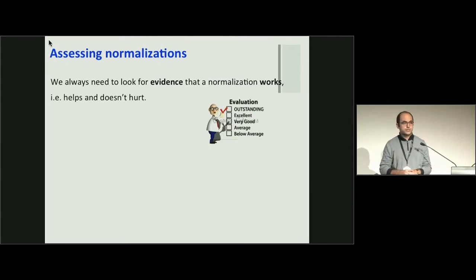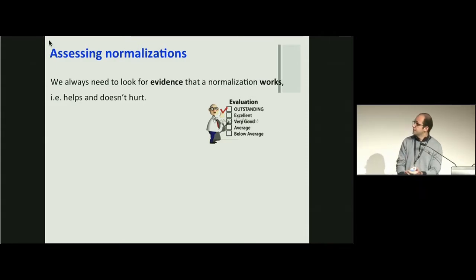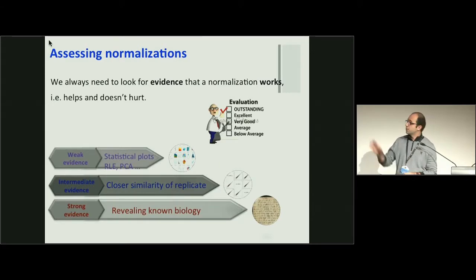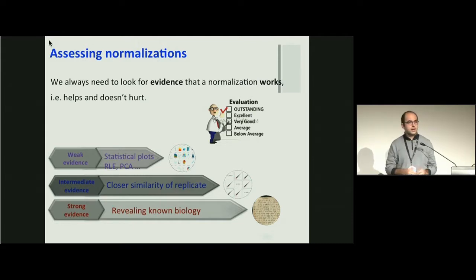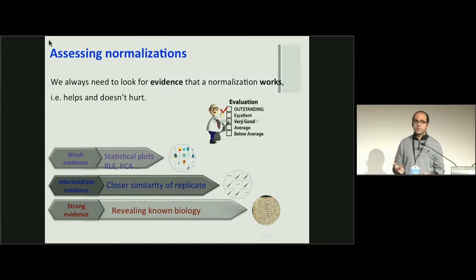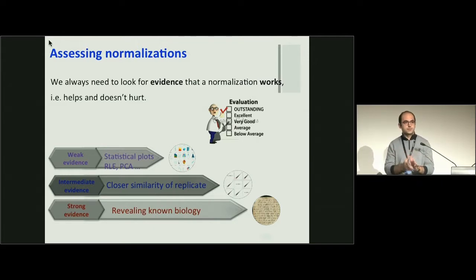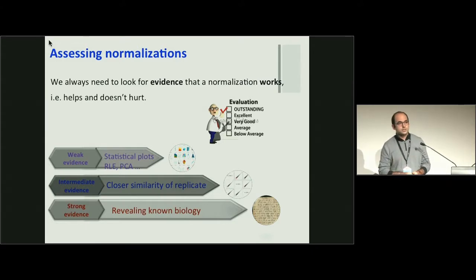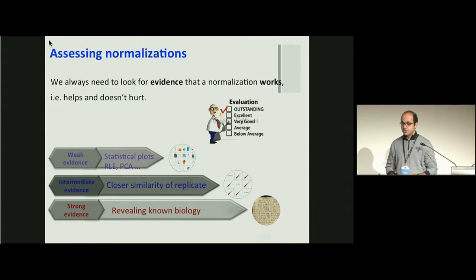The key message of my talk is this: whenever you use a normalization method, you need to assess it. You need evidence that your normalization works. For my study, I've got three levels of evidence - I call them weak, intermediate, and strong. We study statistical plots like RLE and PCA, which we call weak evidence - they are good, but not enough. Because we have some technical replicates, similarity between technical replicates can be another kind of evidence. And if your normalization can reveal a known biology, that would be very strong evidence.